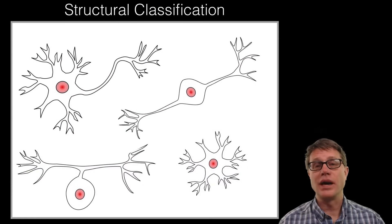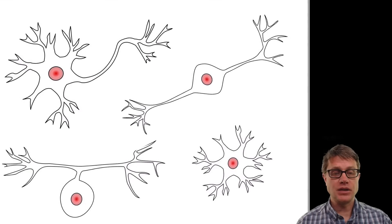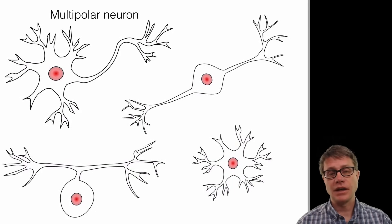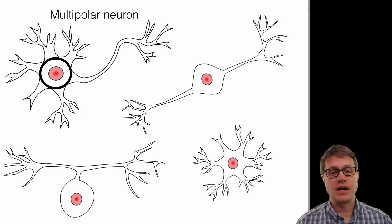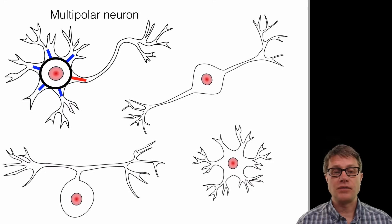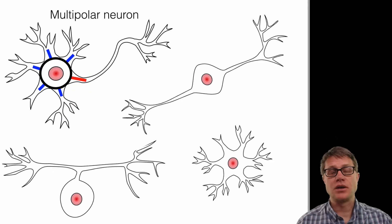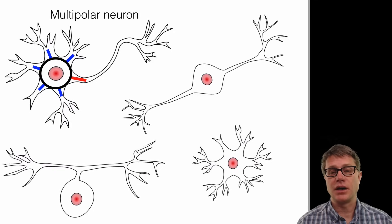Neurons are classified in two ways. The first way is due to their structural classification. So if we take the cell body of a typical neuron, like this multipolar neuron, the way you can figure out what type of a neuron it is — find the cell body and figure out how many poles are coming off of that cell body. So if we count them we have a number of different dendrites coming off of this neuron, and then we have one axon coming off. And so we call that a multipolar neuron. This is the most common neuron that we have in our body.